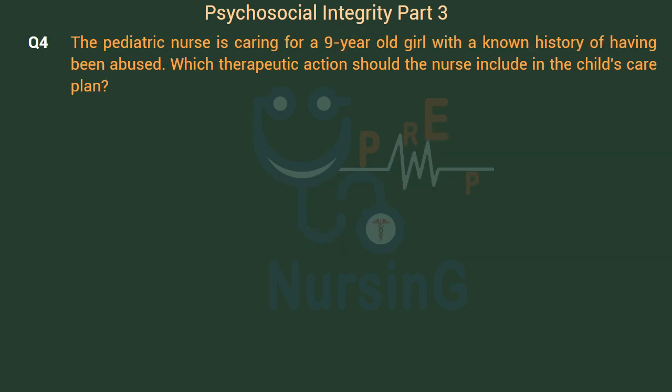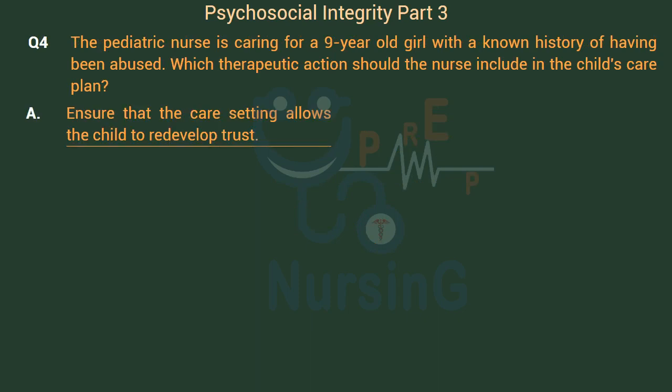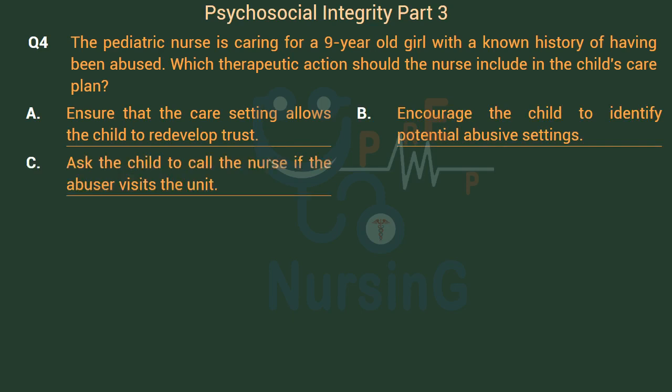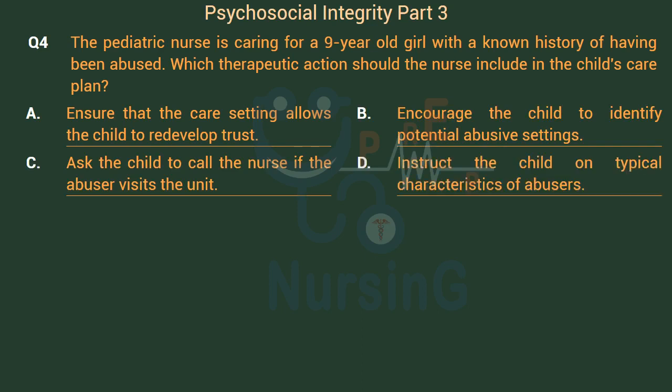The pediatric nurse is caring for a 9-year-old girl with a known history of having been abused. Which therapeutic action should the nurse include in the child's care plan? Option A: Ensure that the care setting allows the child to redevelop trust. Option B: Encourage the child to identify potential abusive settings. Option C: Ask the child to call the nurse if the abuser visits the unit. Option D: Instruct the child on typical characteristics of abusers.